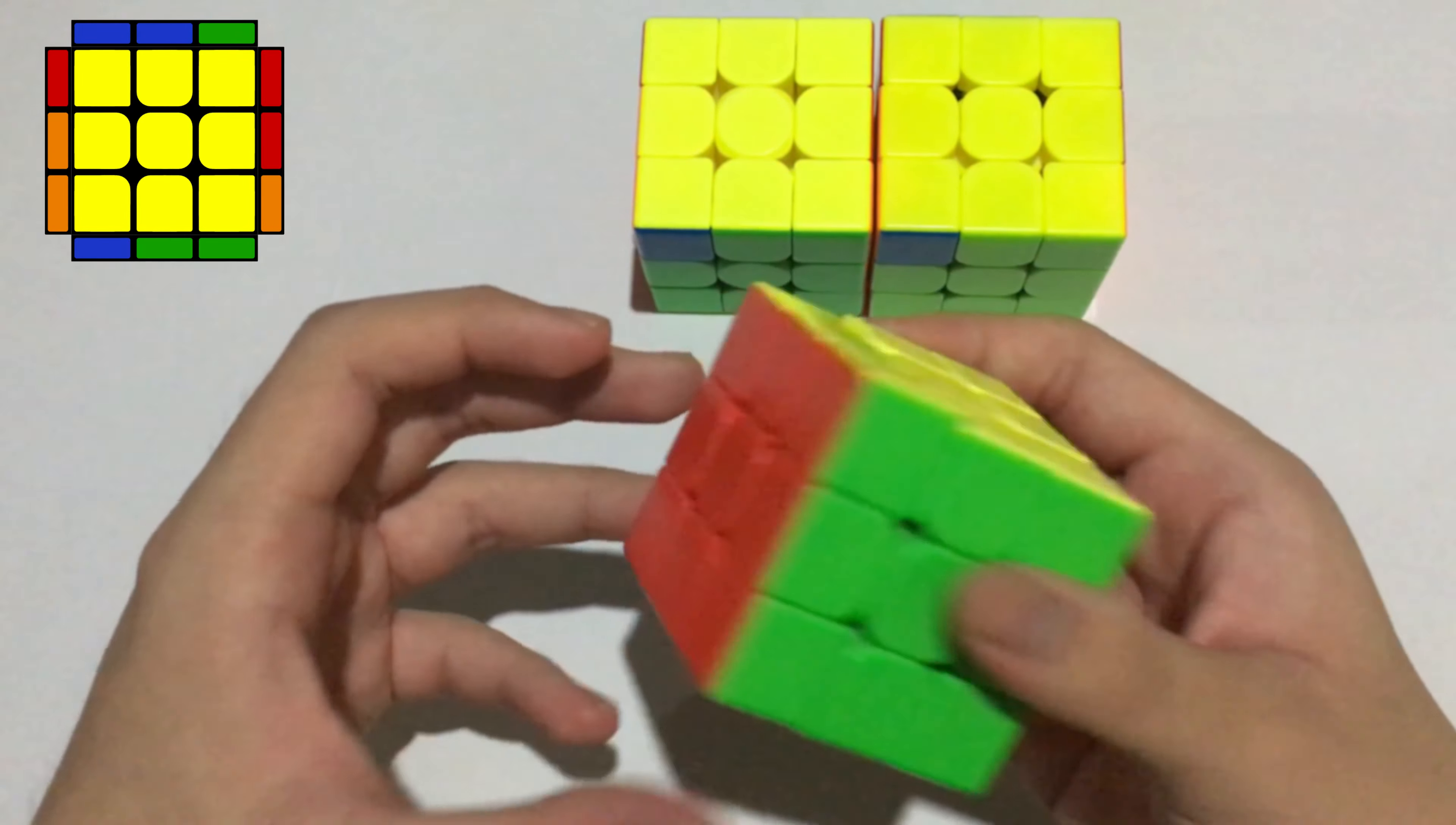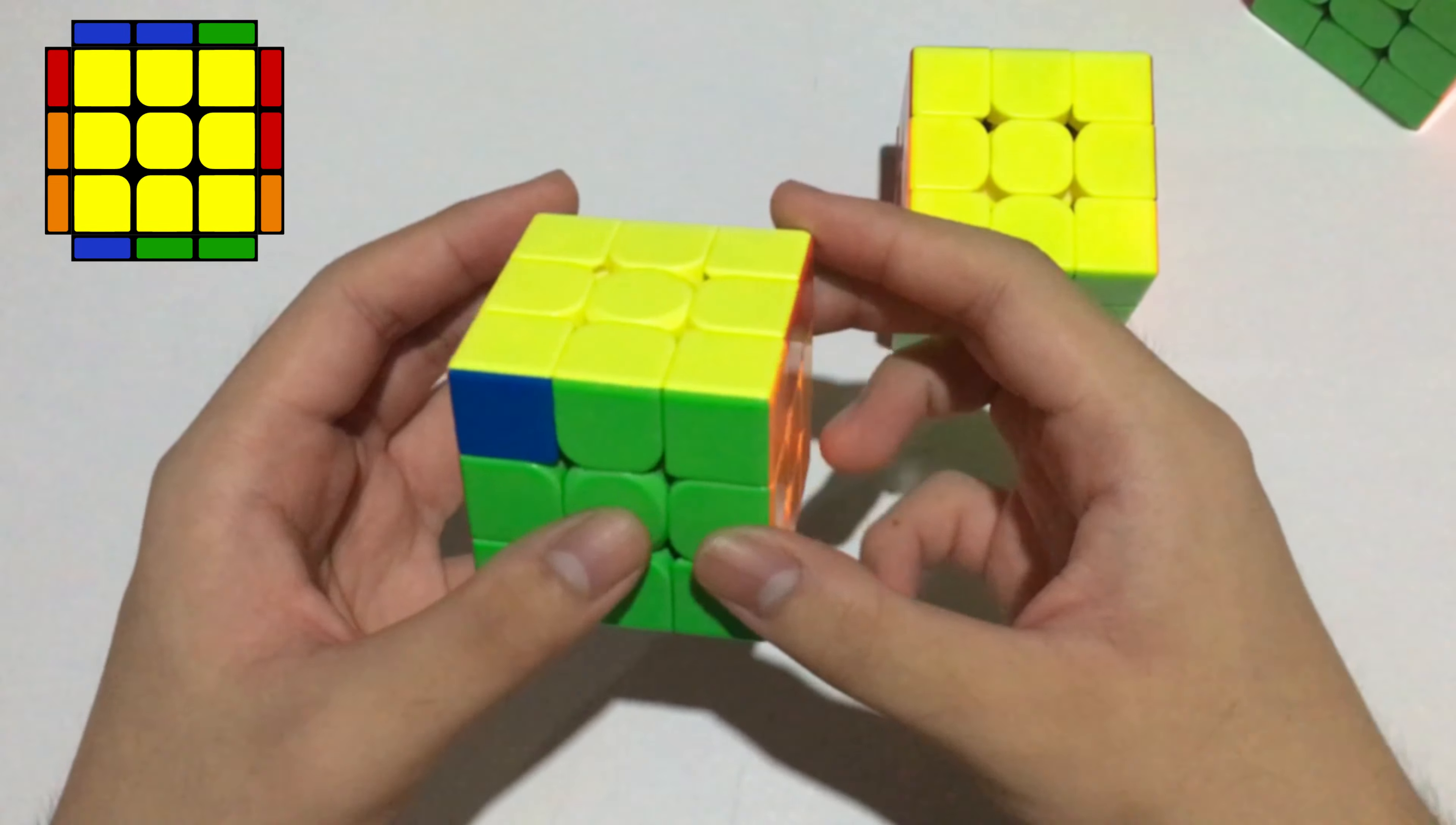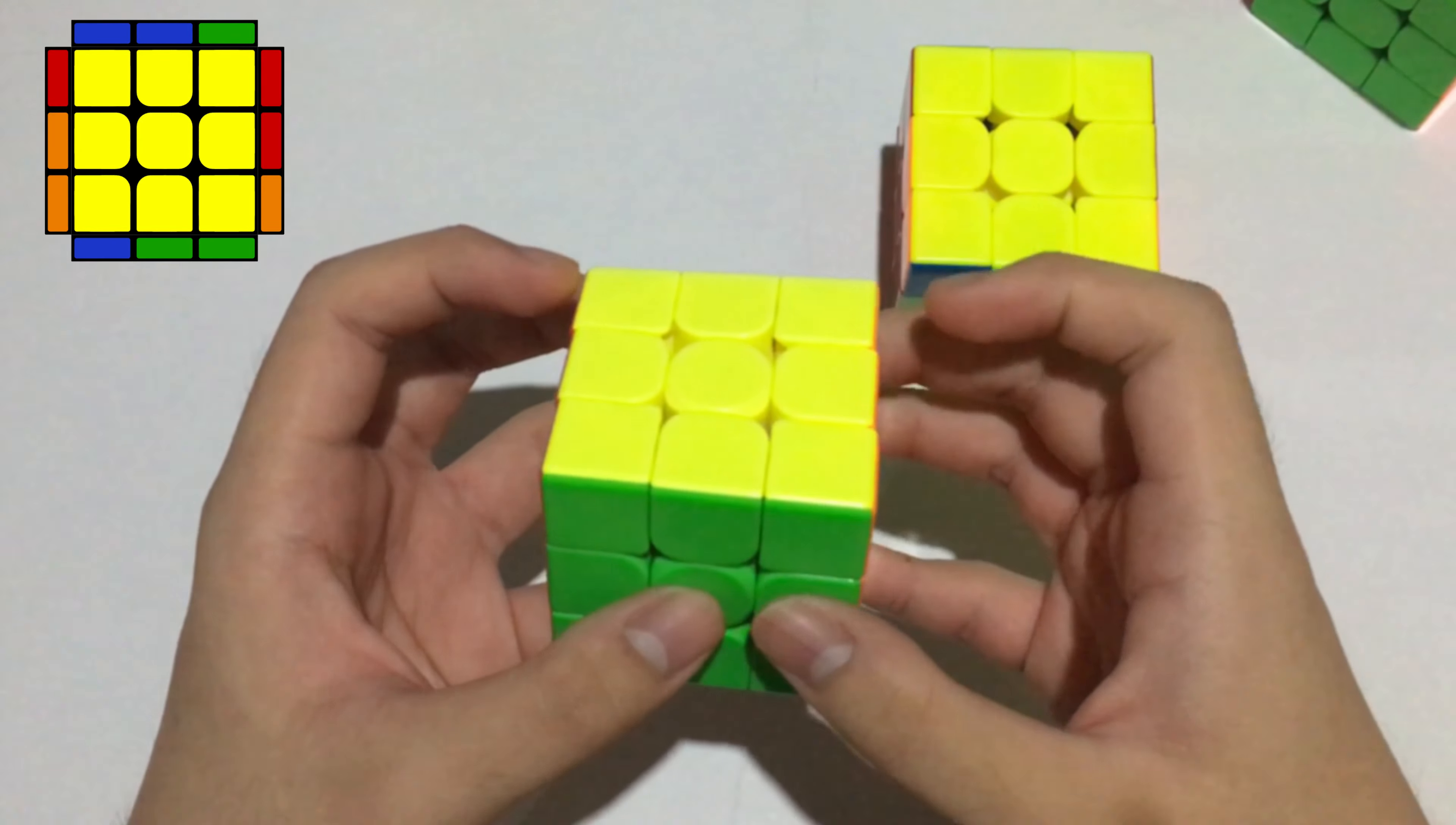So I prepared some good alternatives. Here is the first one, it goes like this. It's just the mirror of the Nb perm algorithm that I use.